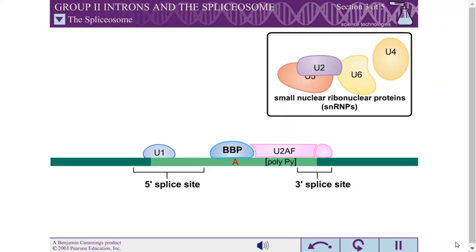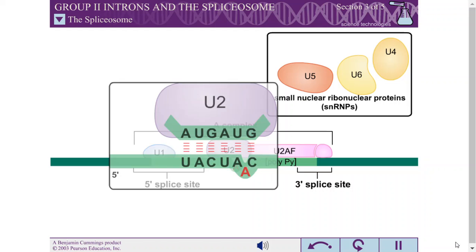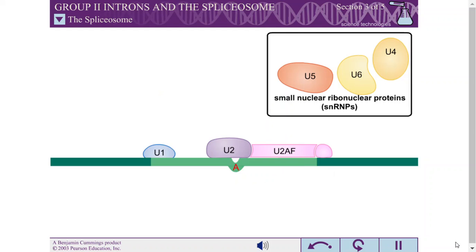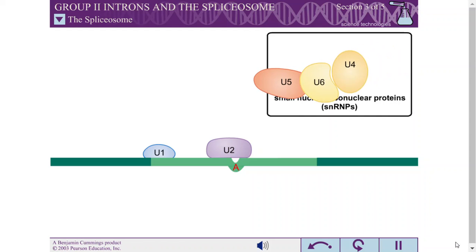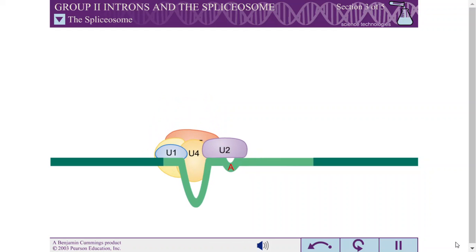The U2 SNRP then replaces BBP at the branch site, aided by U2 AF. This is called the A complex. The branch site A remains unpaired and forms a bulge. U2 AF leaves the complex. The complex rearranges to bring all 3 splice sites together. The U4, U5, and U6 SNRPs join the complex, converting it to the B complex.